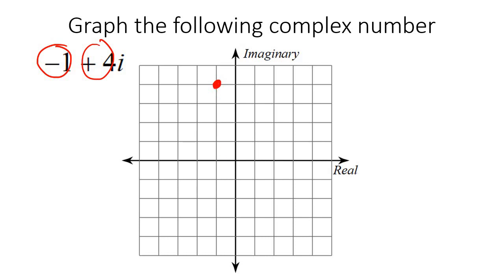Here's the next one. So the real part is 5. 1, 2, 3, 4, 5. So we go 5 to the right, and then we go 3 up. 1, 2, 3, and there we have it. That is how we graph a complex number.